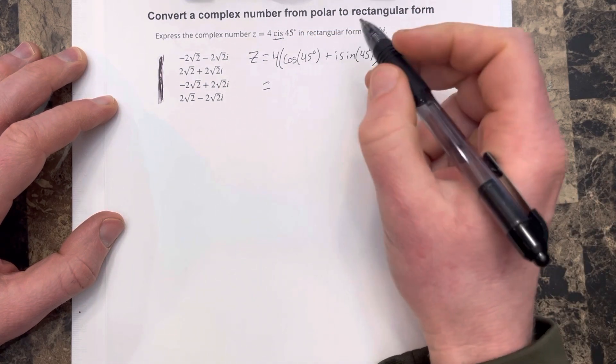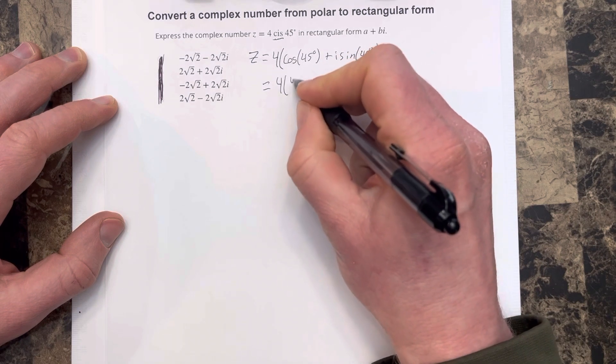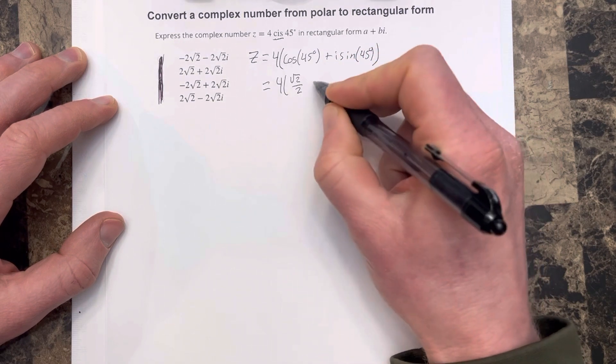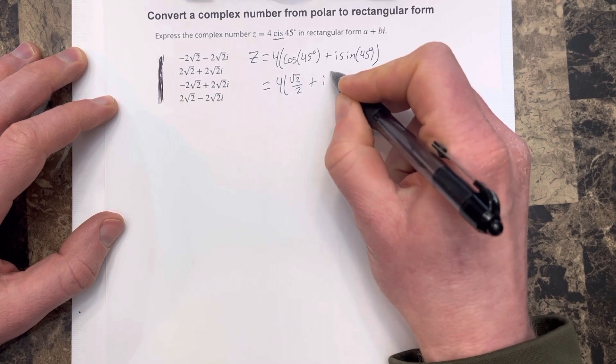Cosine 45 we know is root 2 over 2, so we have 4 times root 2 over 2 plus I times root 2 over 2.